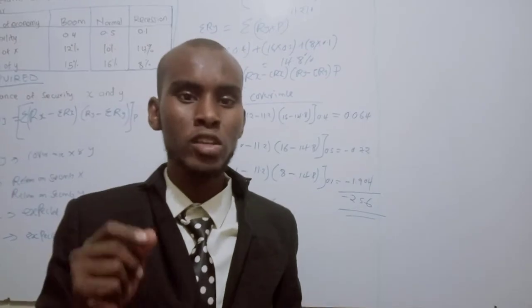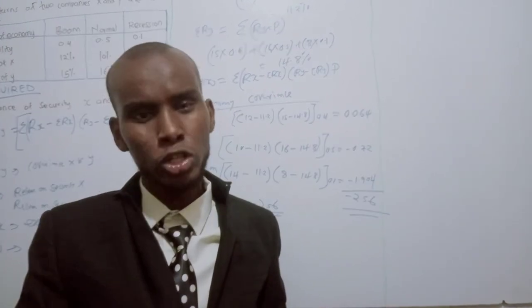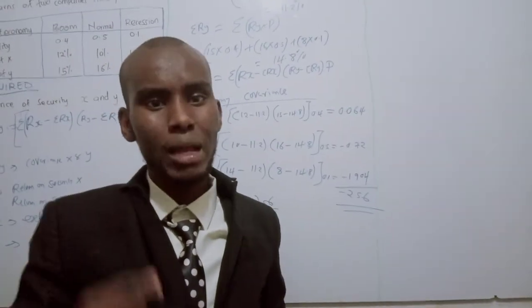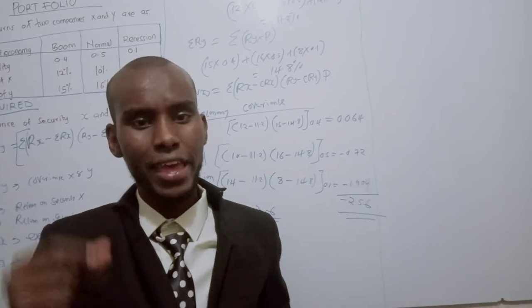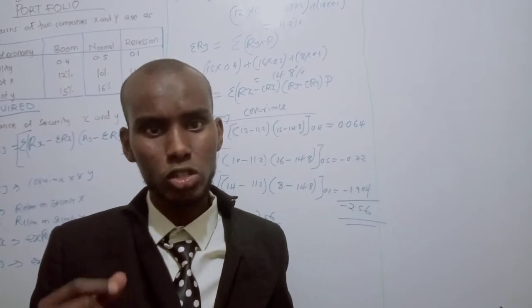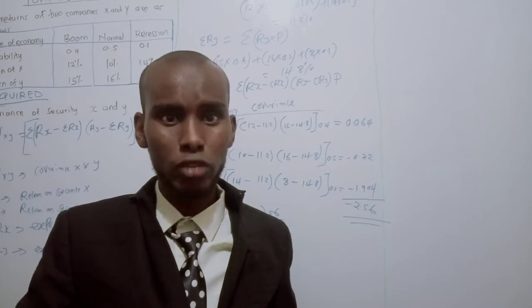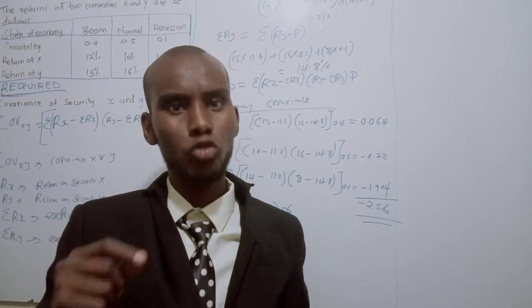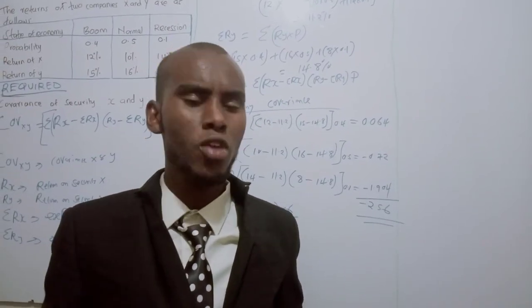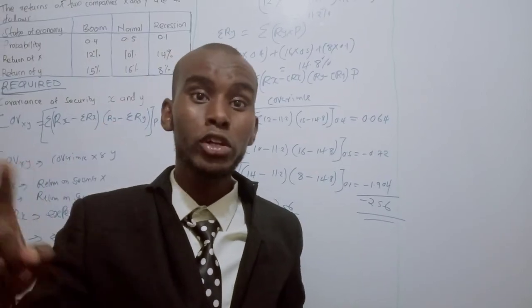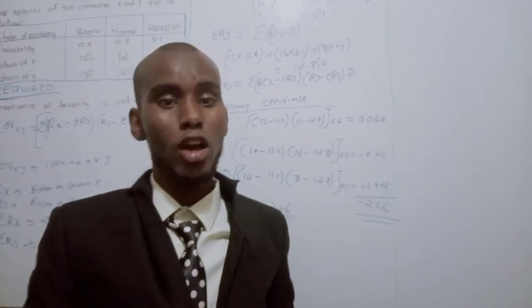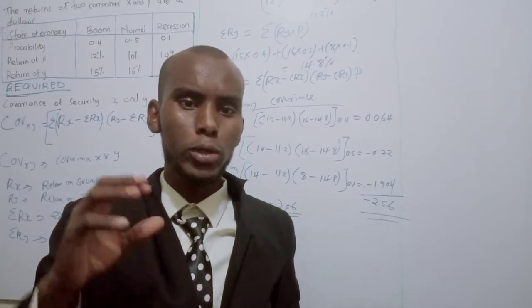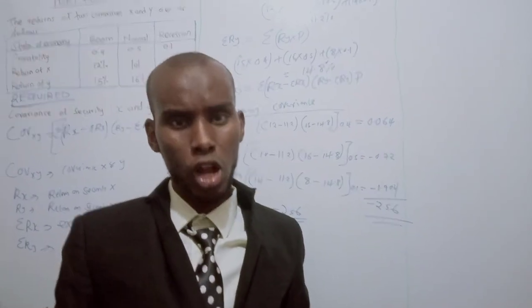To summarize: to get the covariance, you first need to get the expected return by taking the return of X (or Y) and multiplying by the probability. After getting the expected return, apply the covariance formula: (Rx − E(Rx)) × (Ry − E(Ry)) × probability, summed across all states. Hope to see you in the next class where we are going to do correlation coefficient, still under this illustration.